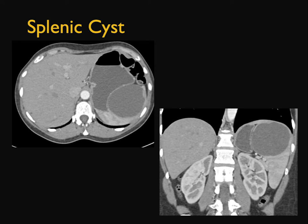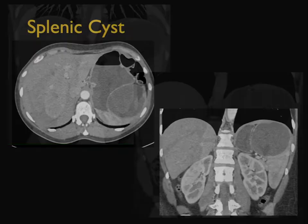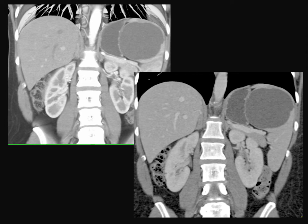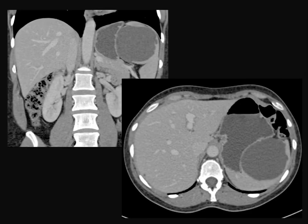Cysts, like cysts in the liver and kidney, are well-defined water density, sharply marginated. They're usually small, can be multiple, but they can be large. When they're large, they can compress the stomach and the patient could have symptoms. Sometimes you get stretching of the splenic capsule, and that can be symptomatic. Sometimes you have mass effect on the stomach. So it is possible that you could end up with a splenectomy even though you know it's going to be a benign process.